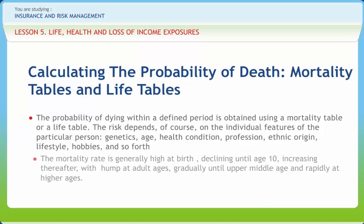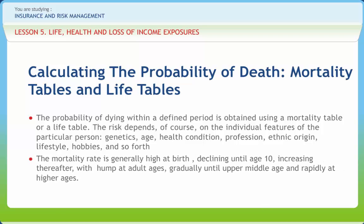The mortality rate for males is relatively high at birth, but it declines until age 10. It then rises to a peak between the ages of 18 to 22 and declines between the ages of 23 and 29. The rise is rather slow until middle age, at which point it begins to accelerate.